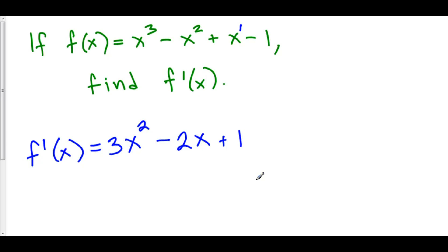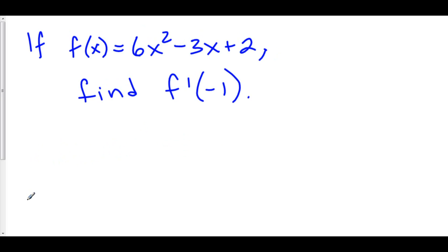Power Rule makes taking the derivatives of polynomials extremely easy. We can even do these in our head. If f of x is equal to 6x squared minus 3x plus 2, let's find f prime of negative 1. Well, first we have to find f prime of x.